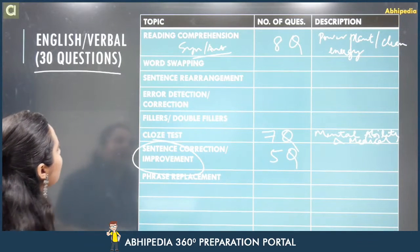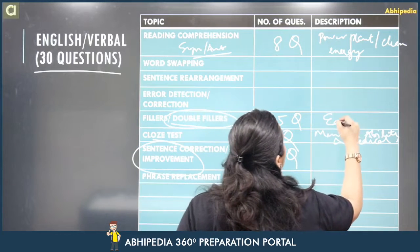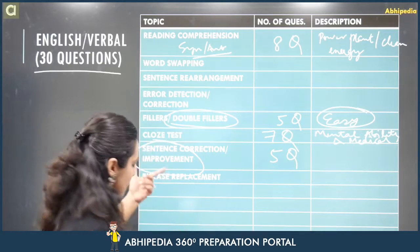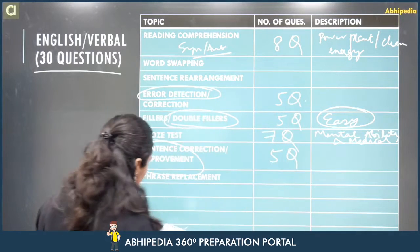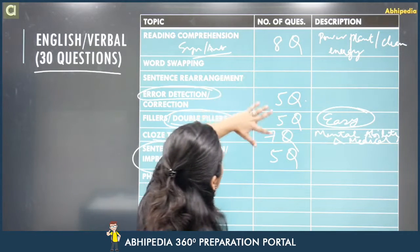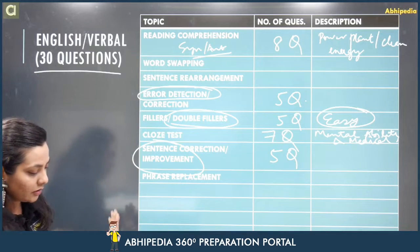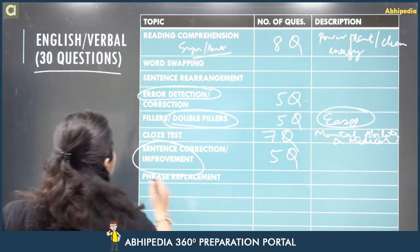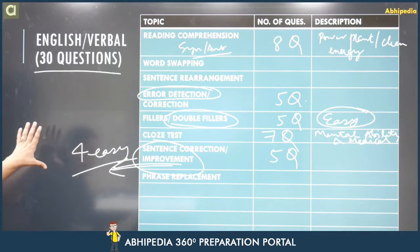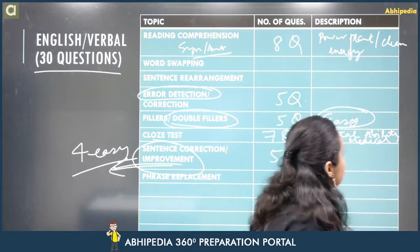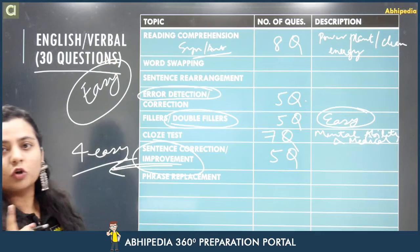Apart from that, you had double fillers — approximately five questions. Yeh easy to moderate, towards the easier side — jo double fillers the wo sab easy the. Then there was error detection — five questions. Sentence improvement bhi tha, and out of those five sentence improvement questions, four were very very easy and quickly doable. Overall, the English section for Shift 1 on 11th October was on the easier side of the spectrum.